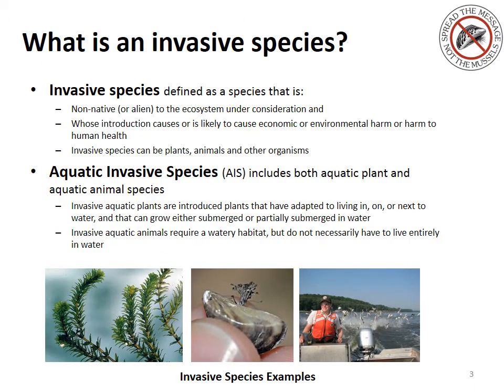An invasive species is defined as something that is non-native to that ecosystem. Once it's introduced, it causes or is likely to cause economic or environmental harm. Invasive species can be plants, animals, and other types of organisms. The AIS program for Kansas City includes both aquatic plant and animal species and preventing the spread to our watersheds.